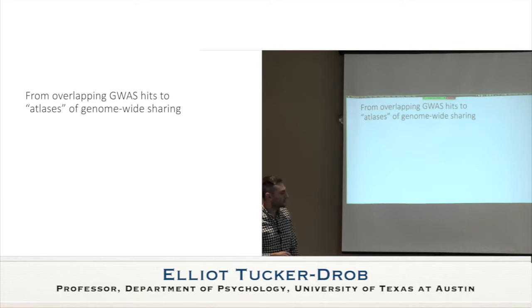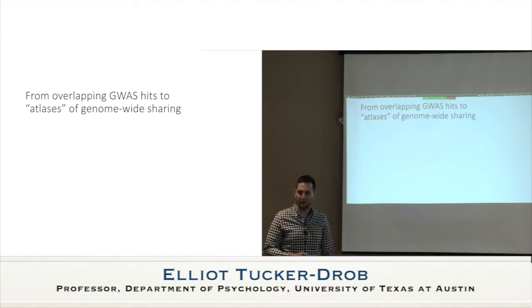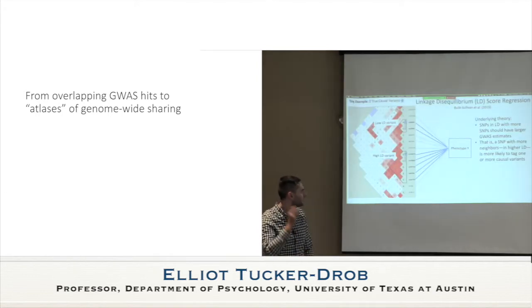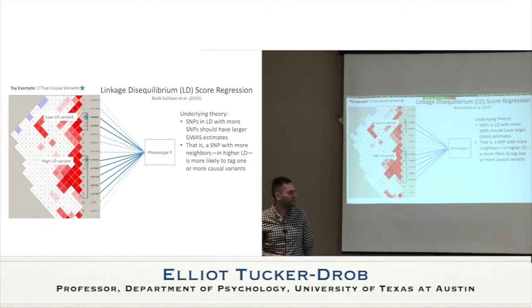We'd really like to know about the genetic architecture shared more generally across traits, including variants that perhaps have yet to be discovered. This led to methods first developed for estimating SNP heritability and then genetic correlation very soon after — and you've heard about these. I think Raymond talked about LD score regression.